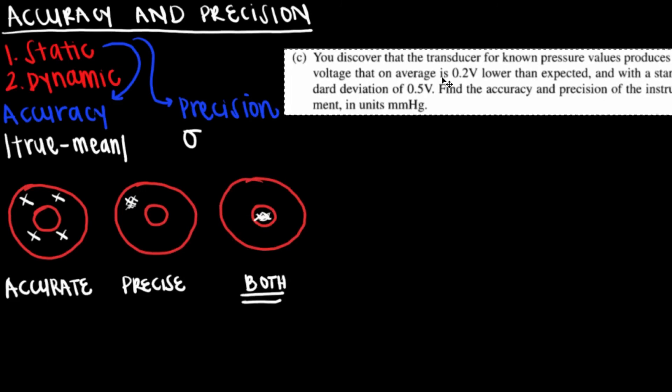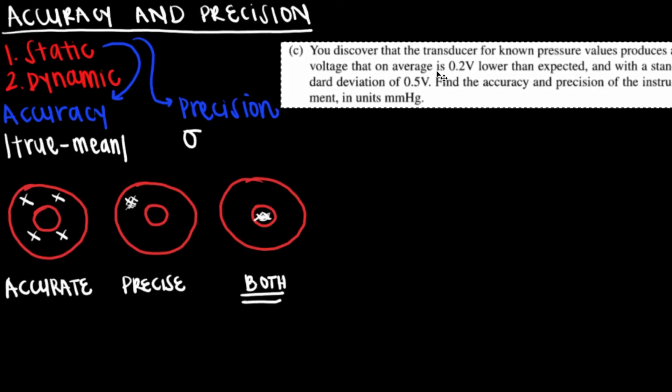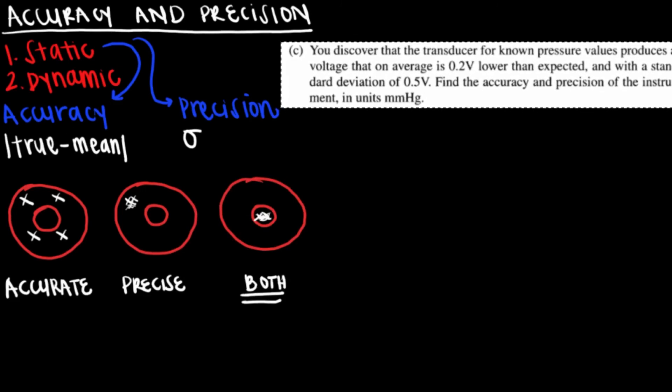Ideally, measurements are both accurate and precise, meaning they are close to the true value and to each other. For example, hitting the bullseye.